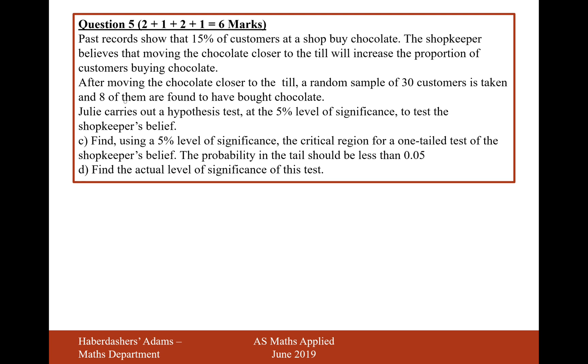So we've roughly got the same blurb at the start. Find using a 5% level of significance, the critical region for a one-tail test of the shopkeeper's belief. The probability of the tail should be less than 0.05. Yes, that's how standard hypothesis tests work. So what I'm going to do, first of all, is just label the key detail for this hypothesis test. It's going to be a sample of 30 with a probability of 0.15. The null hypothesis is for the probability to remain at 0.15. And the alternate hypothesis is to go above 0.15.